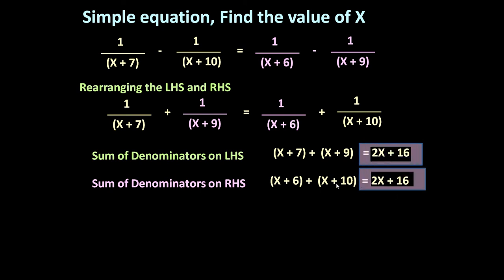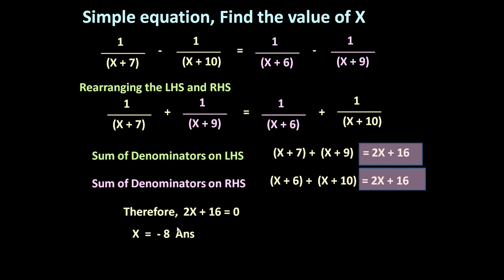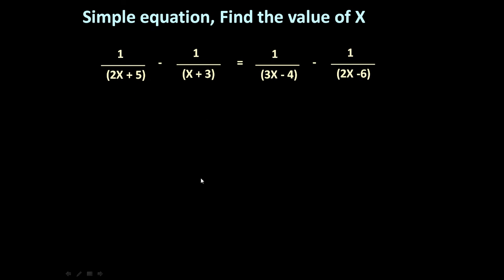The sum of denominators on the right-hand side, x plus 6 plus x plus 10, is equal to 2x plus 16. So both the left-hand side and right-hand side sums are the same. We can put 2x plus 16 equal to 0, so x is equal to minus 16 upon 2, that is minus 8. So the answer is minus 8. It is a very simple technique. Let us solve one more similar problem.